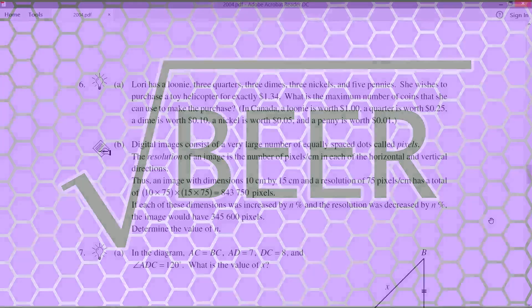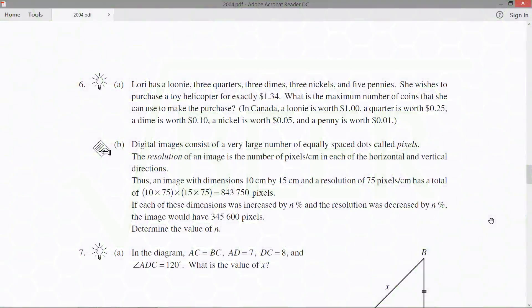Hello, everybody, and welcome back. Root Beer here with question number six now on the 2004 Euclid competition. It's another two-parter. Got a light bulb and a written question, which tends to be the style for the middle questions. What have we got? So, part A.